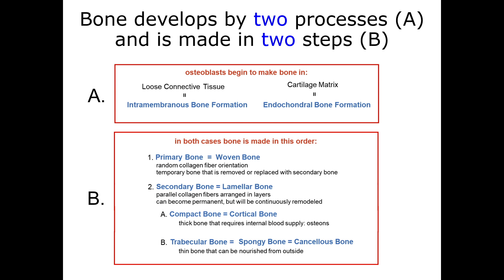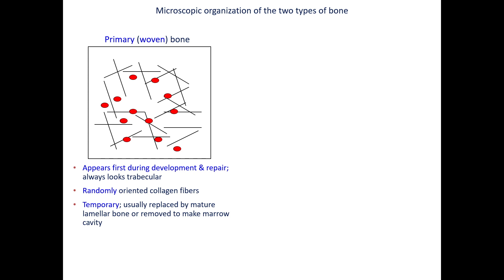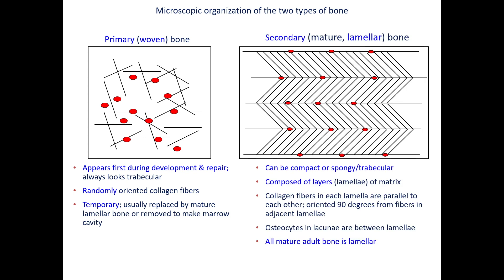Looking more at this organization: primary or woven bone has randomly oriented collagen fibers, appearing during embryogenesis and repair, always looking trabecular, and it's temporary — also a relatively quick process. In secondary bone, the collagen fibers are parallel to one another but oriented 90 degrees from fibers in the adjacent lamellae. In compact bone, fibers are in cylindrical lamellae of osteons. In trabecular bone, lamellae run the length of the trabeculae. This arrangement allows for greater strength and less fragility — think plywood versus a thin sheet of balsa wood. Failure to remodel primary to secondary bone can lead to more fragile bones and increased fractures.